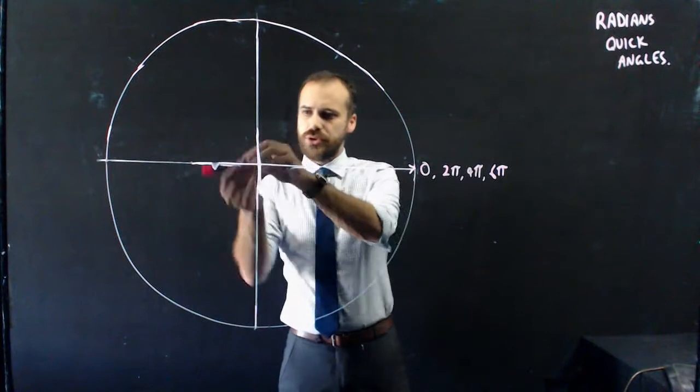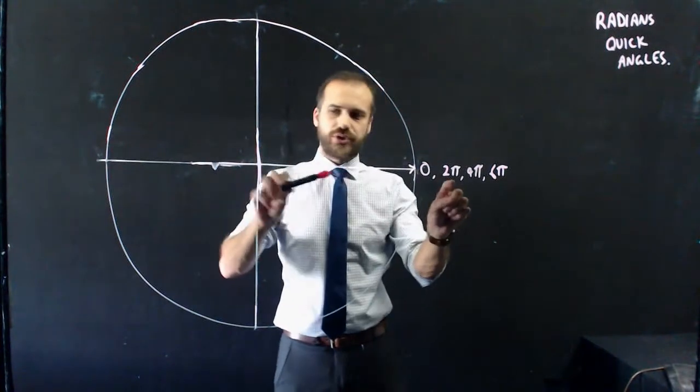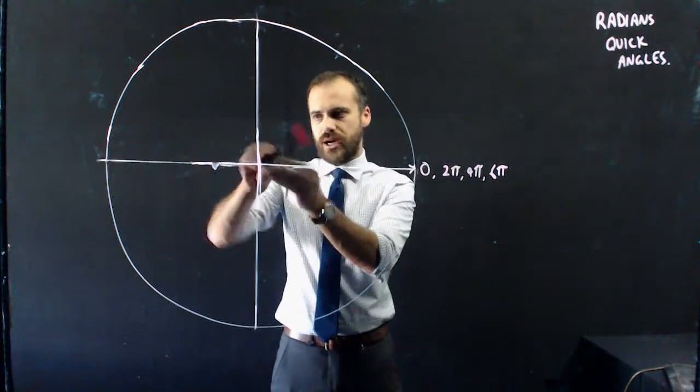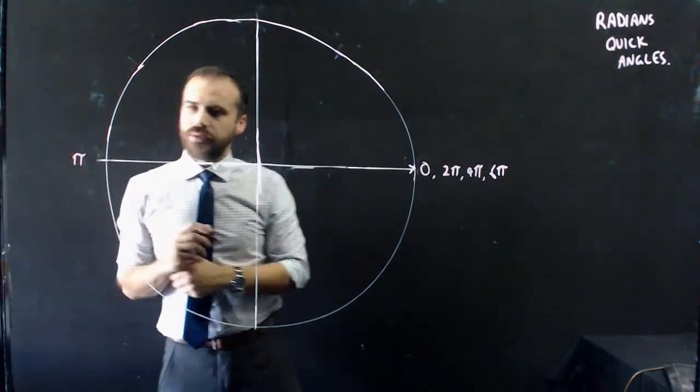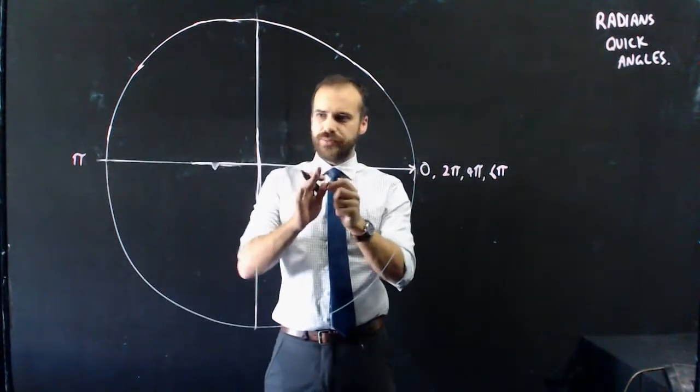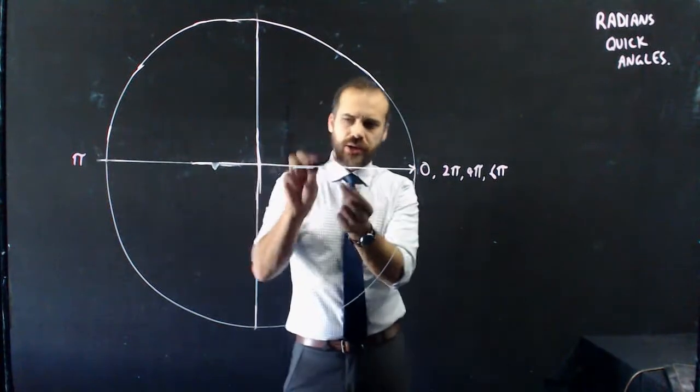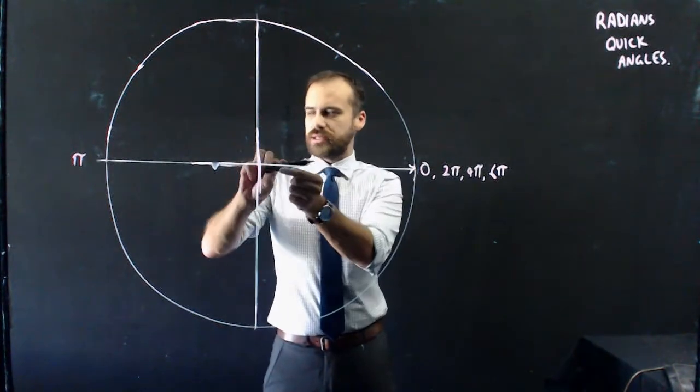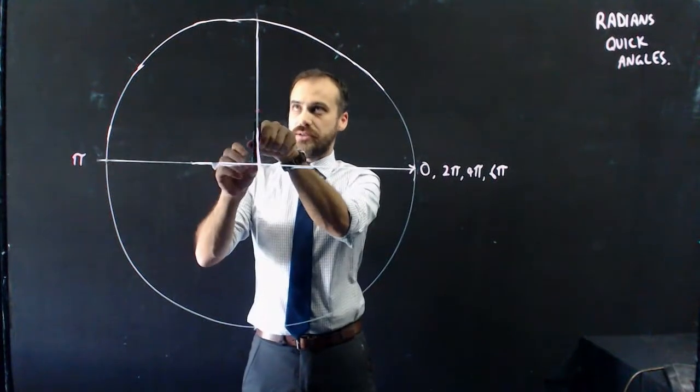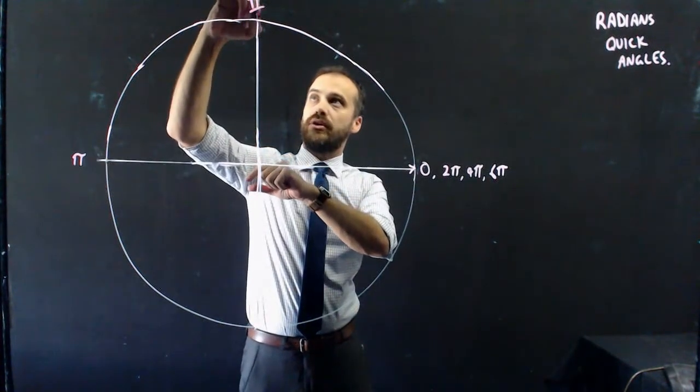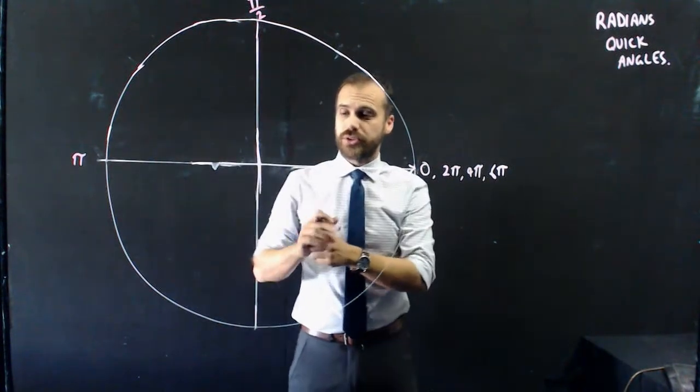If it's 2π for a full spin, then it must be half of 2π for half a spin, which is π. If they do a quarter spin, they're probably going to fall off their skateboard, but if they do a quarter spin, that's half of a half spin. So that's π/2. 90 degrees is now π/2.